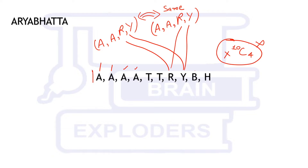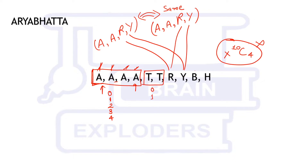Since the repeated letters — if we take two A's, any two of the four A's will be treated as the same selection. So from the part of A's, we can select zero, one, two, three, or four A's — five types of selections. Similarly from the part of T's, we can select zero, one, or two T's. And from the remaining distinct letters, we have four C zero or four C one types of selections.